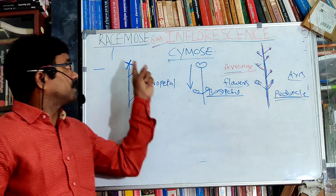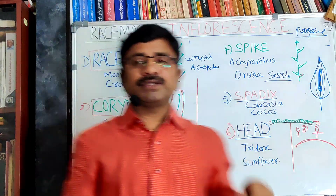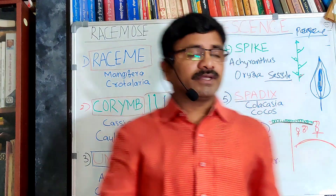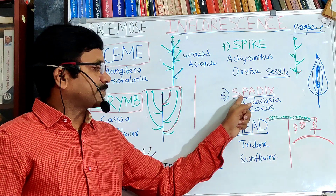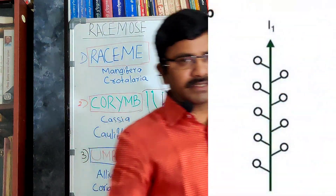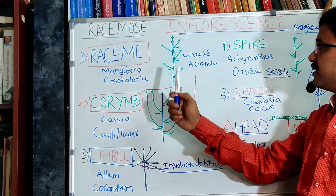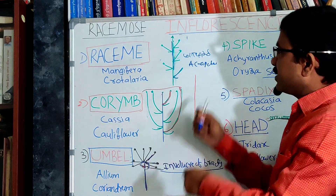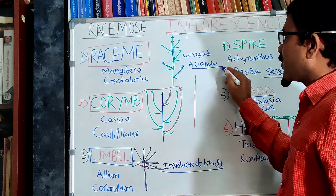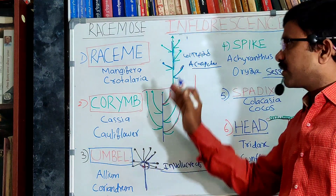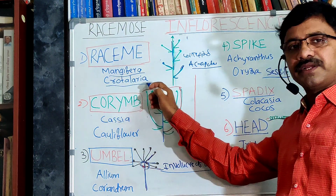Now let us discuss the racimose kinds of inflorescence in detail. The types are: raceme, corymb, umbel, spike, spadix, and head inflorescence. In raceme, the peduncle bears bracteate, pedicillate flowers arranged in an acropetal manner. It is found in Mangifera indica and Crotalaria.